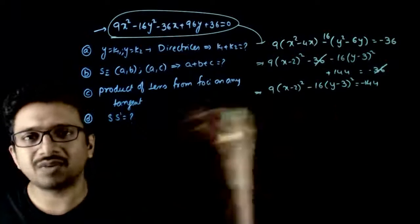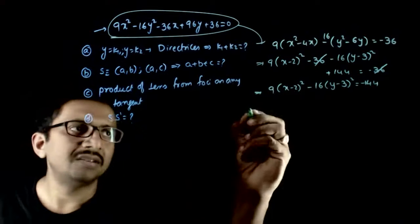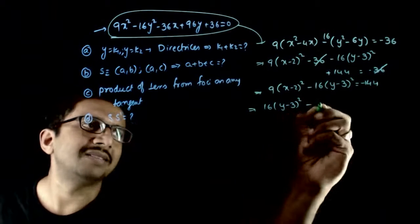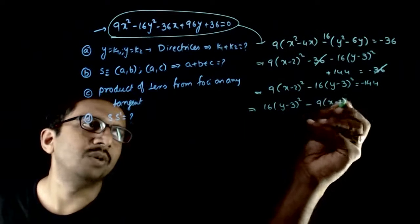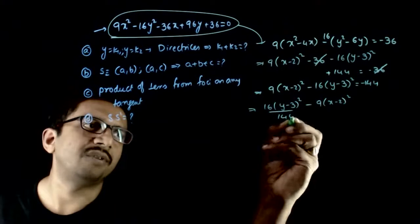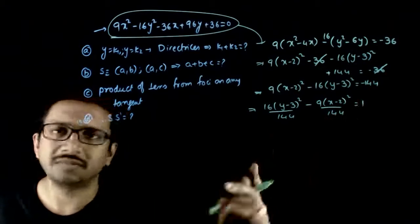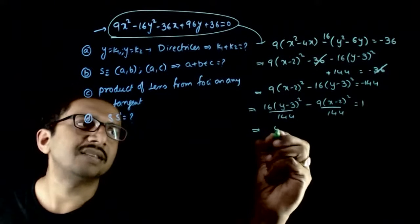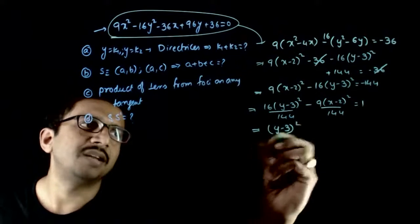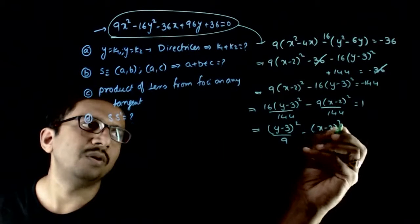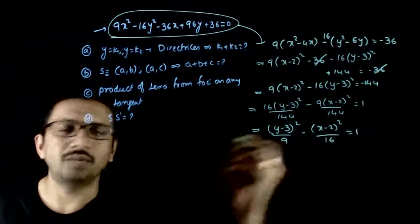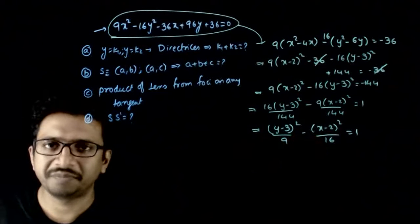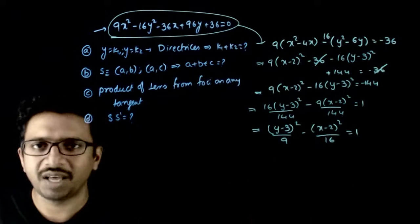Sending −144 to the denominator gives 16(y − 3)² − 9(x − 2)² divided by 144, equal to 1. The minus sign reverses the order of the two terms. This implies (y − 3)²/9 − (x − 2)²/16 = 1. This is the equation of the required hyperbola in standard form.